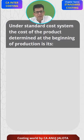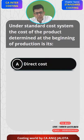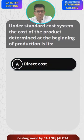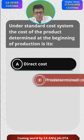Under the standard costing system, the cost of the product determined at the beginning of production — is it: (a) a direct cost? Direct cost means direct material, direct labor, and direct expenses — that is, prime cost.